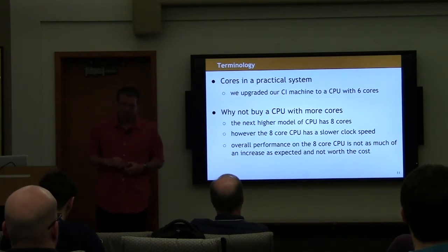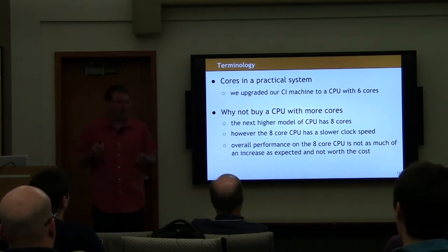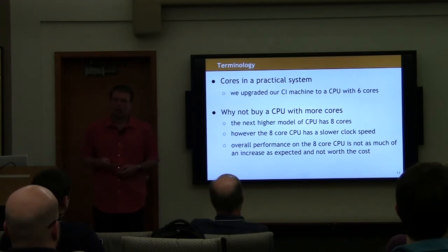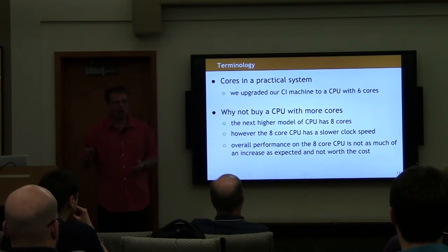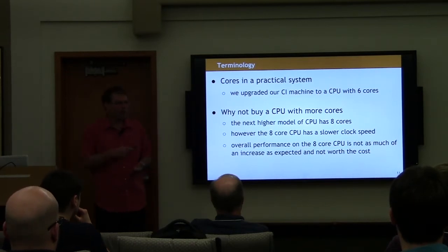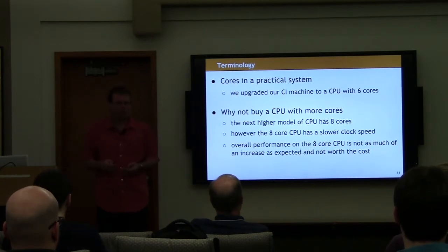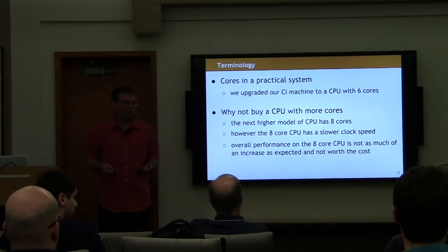In a practical sense, Barbara and I have a CI machine that runs a lot of our continuous integration tests, and it has a six-core CPU. We looked at it and said, should we get the next more expensive CPU that has eight cores? The answer is no, because the eight-core CPU has a slower clock speed, so each core can do less work in the same amount of time. The premium you pay is enormous for what is actually a very small improvement in speed. You really want to understand the underlying behavior of the hardware to get an idea of how its performance will be with various solutions.